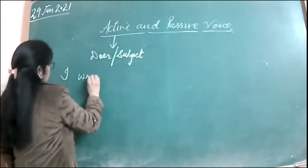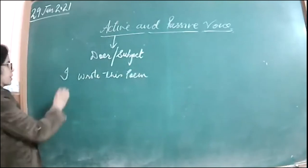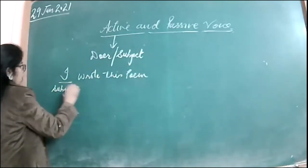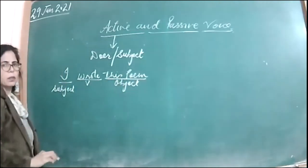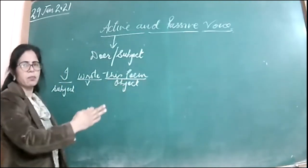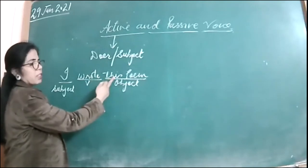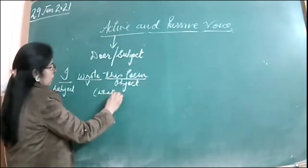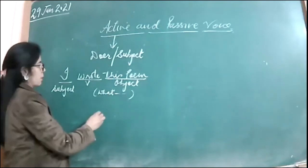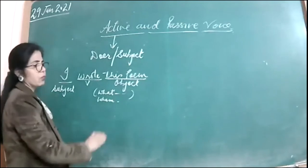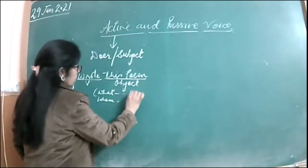For example, 'I wrote this poem.' In this sentence, 'I' is the subject, 'wrote' is the verb, and 'this poem' is the object. To determine the object, we ask 'what' from the verb — 'what wrote?' The answer 'this poem' is the direct object. When you get the answer to 'what' from the verb, that is the object. If you get the answer to 'whom,' that is the indirect object.